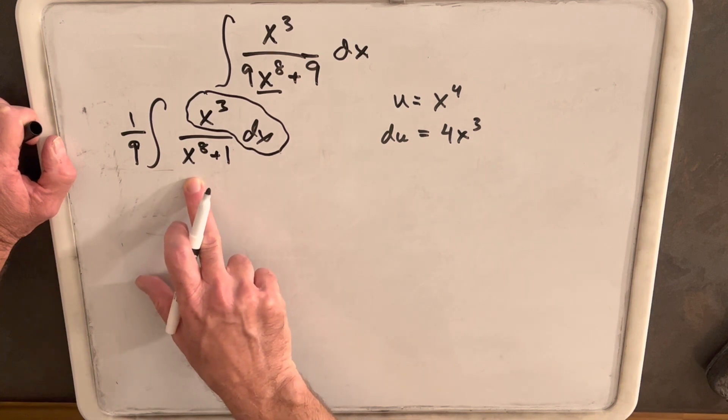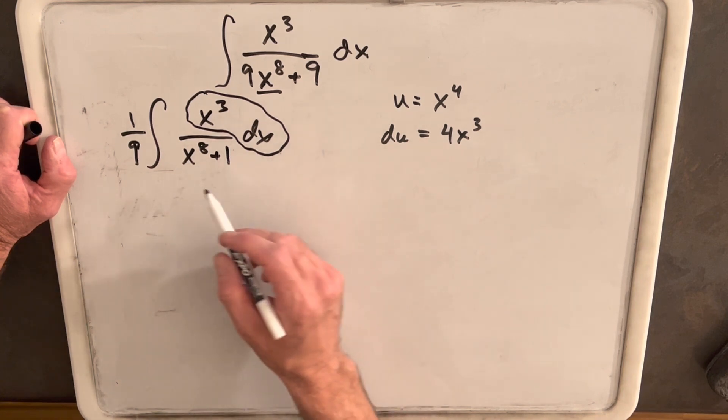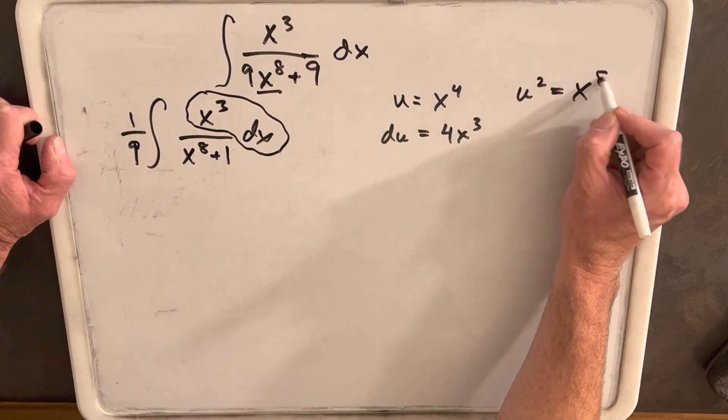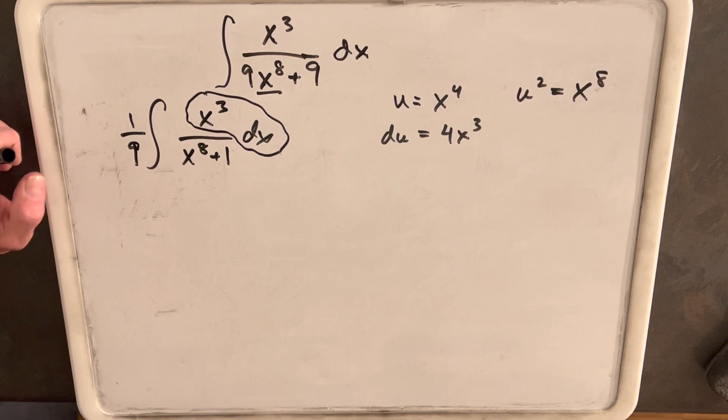But the problem, we have an x to the eighth there. What we can do, though, is square our u. So, if we say u squared equals x to the eighth, we've created our eighth power that way.